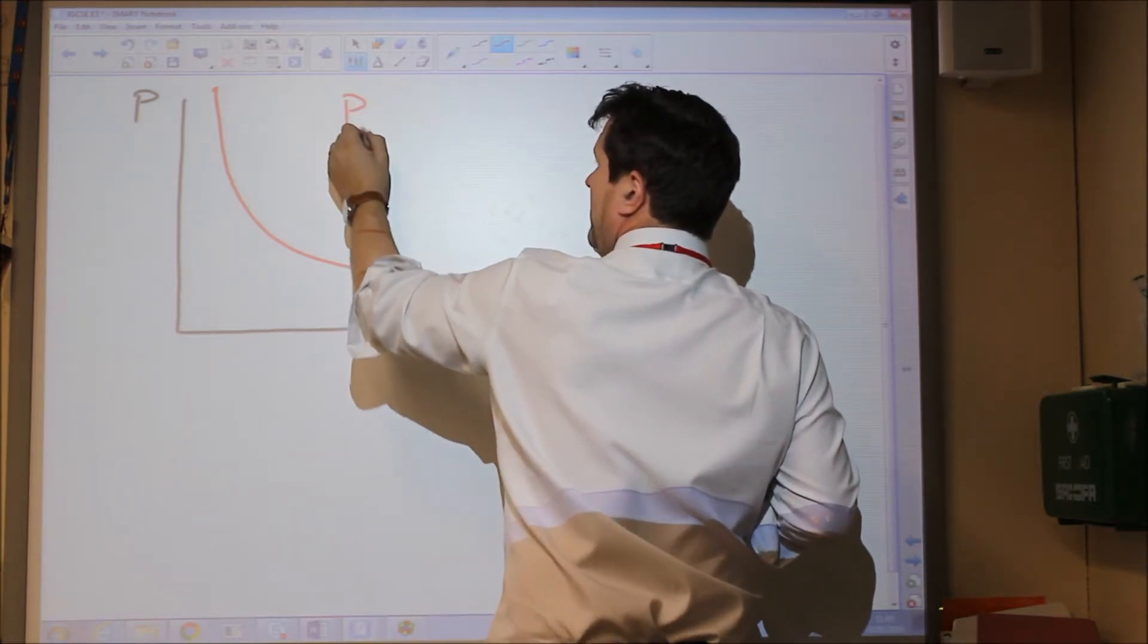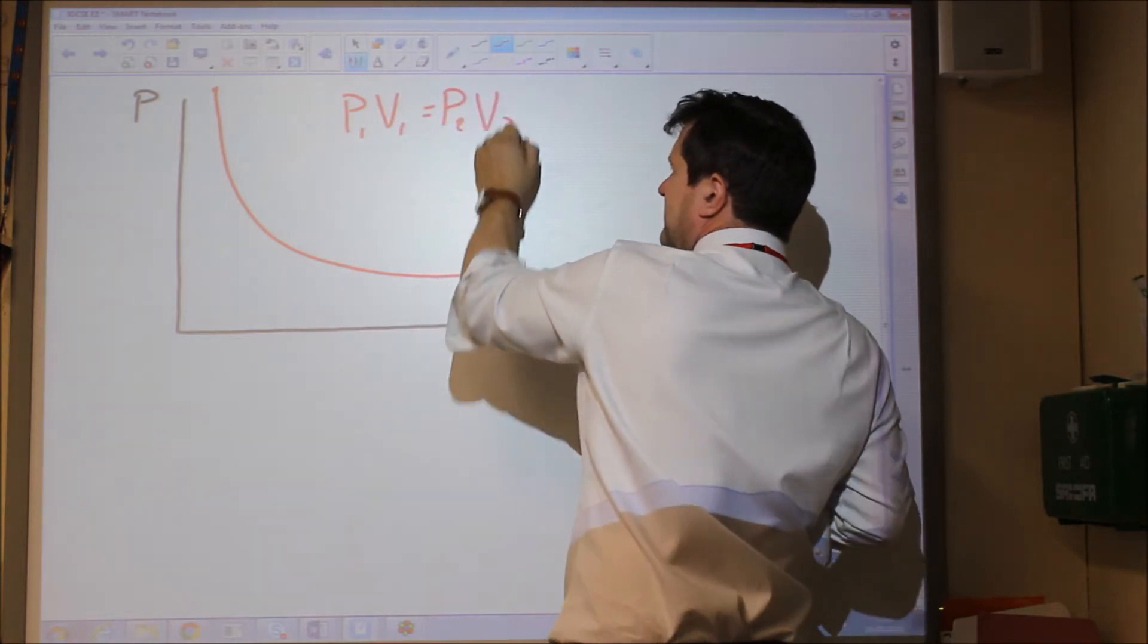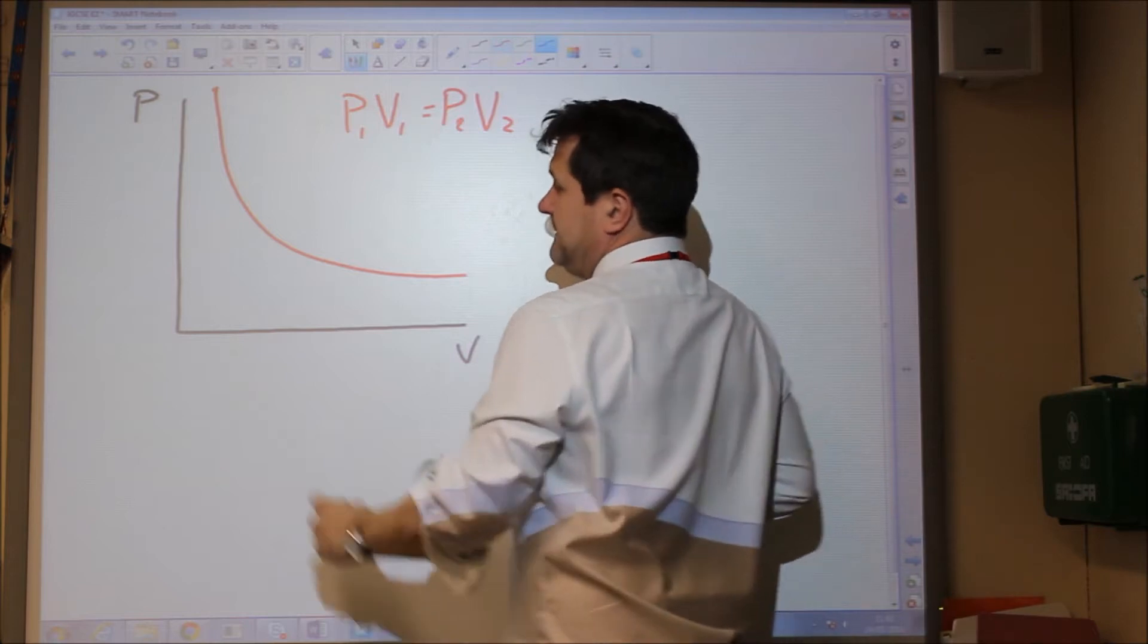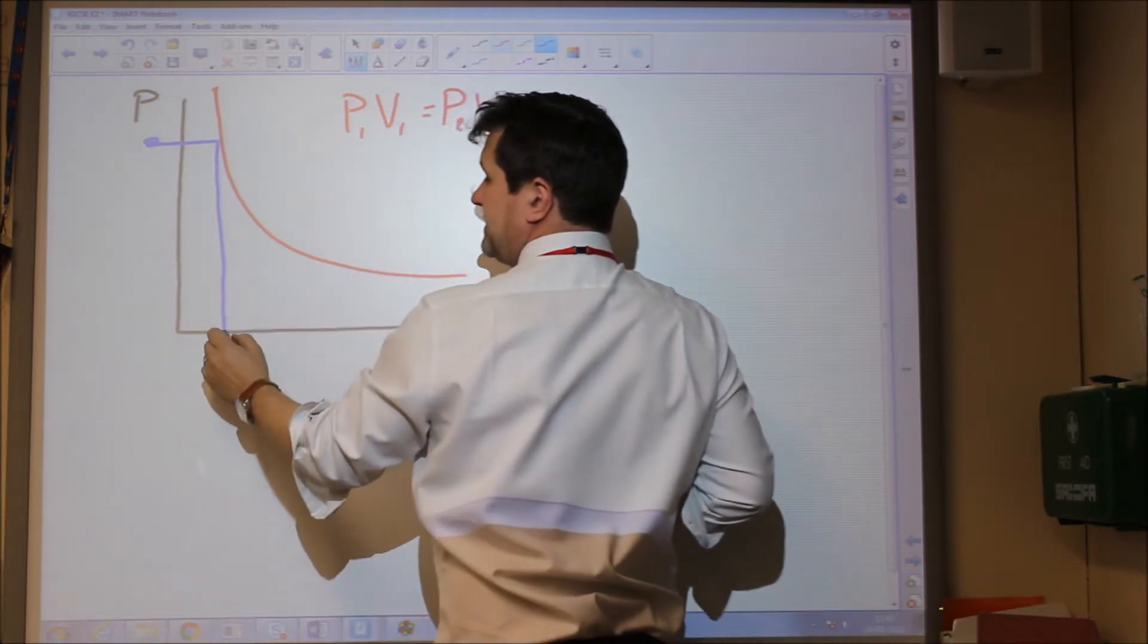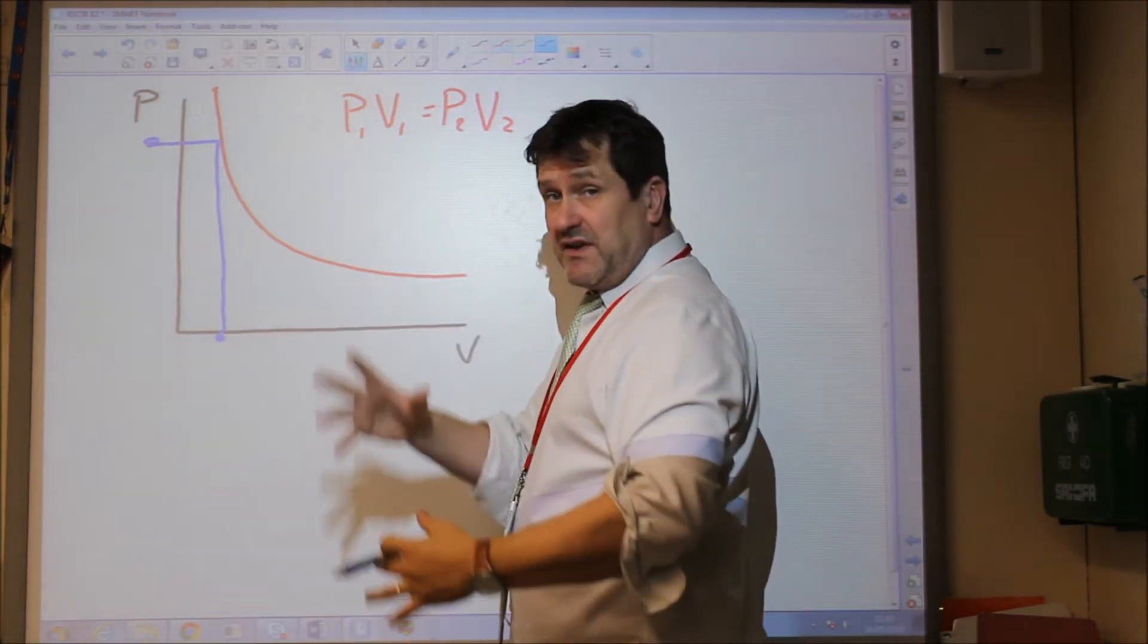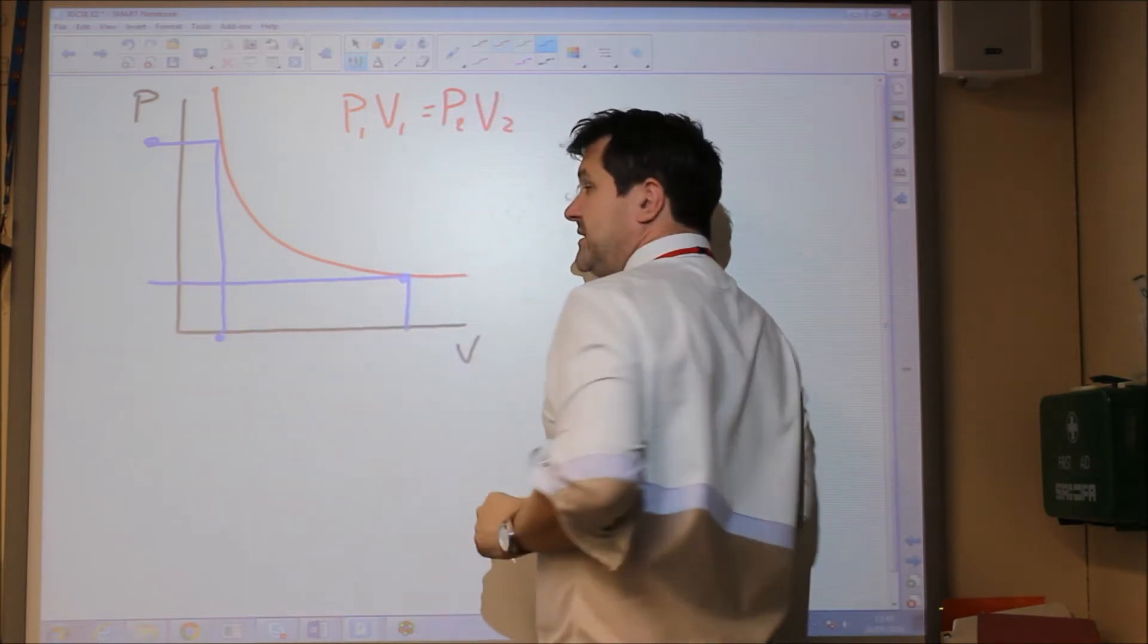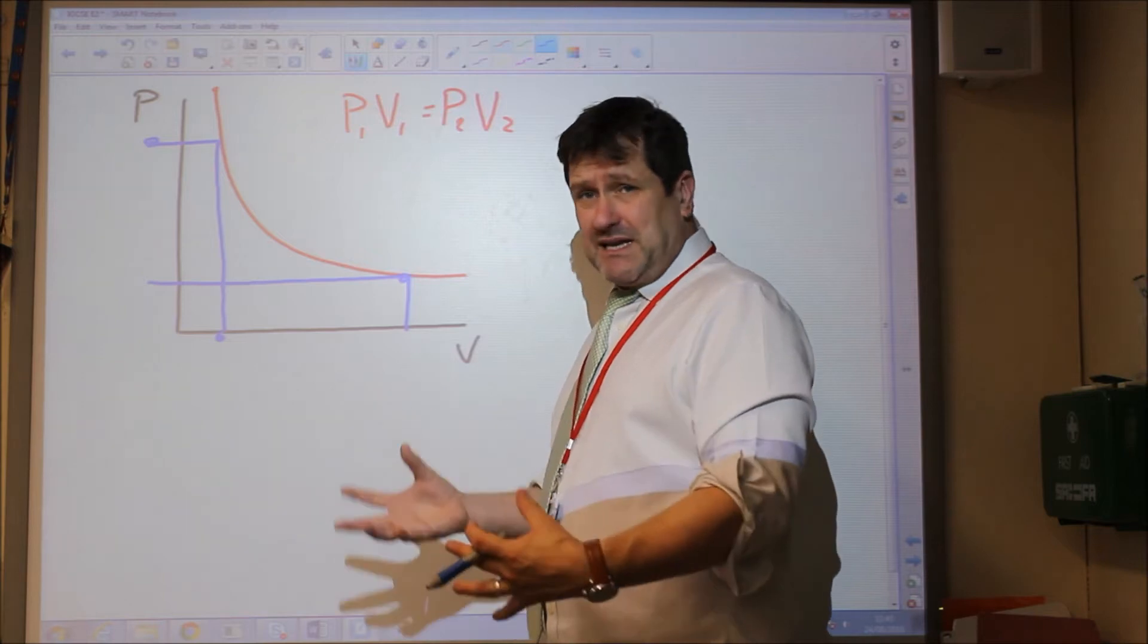And from this, Boyle was able to determine an equation, and that is that P1 V1 equals P2 V2. And all this means is, if you looked at the pressure times the volume at a given point, when you expand the gas or compress the gas further, then the pressure times the volume at another point will be exactly the same.